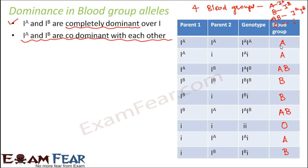Blood group is our phenotype — the trait that gets displayed. The parents play a role because one allele comes from the mother and the other from the father. You will see many exam questions based on blood group scenarios where you are given the blood groups of both parents and must determine whether a child with a specific blood group could be their offspring.